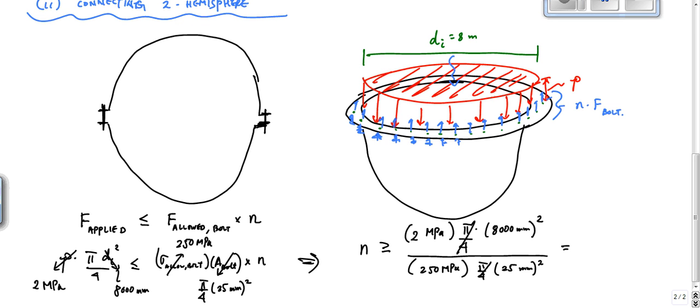And can someone give me a number for that? 819.2 bolts are required. So N has to be greater than 819.2 bolts, but you can't use 0.2 of a bolt. So that means you would say, use 820 bolts, right? Okay. And that's there you go.